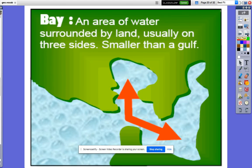A bay. A bay is an area of water surrounded by land, usually on three sides. It is usually smaller than a gulf.